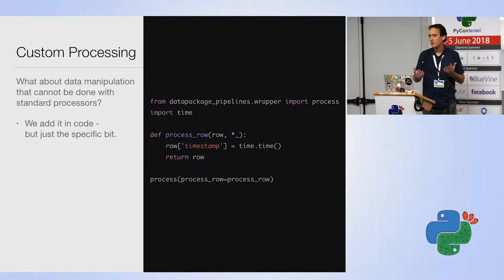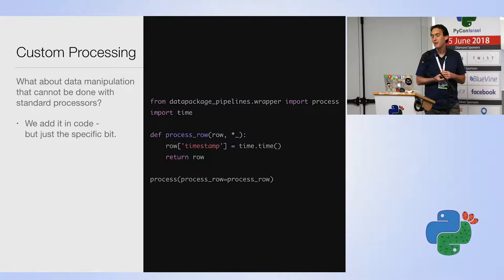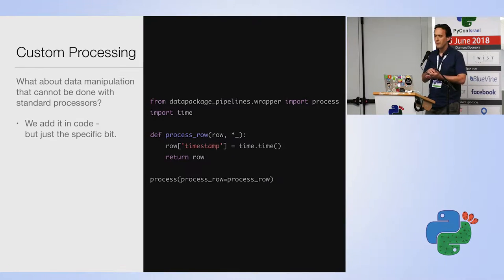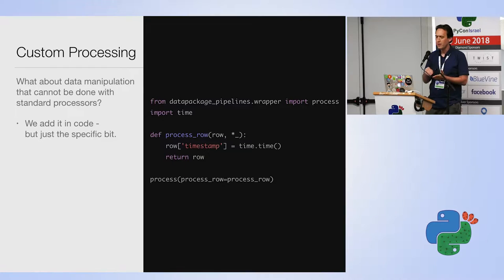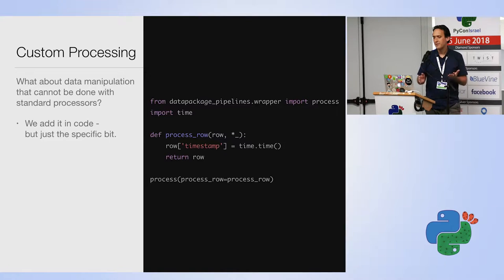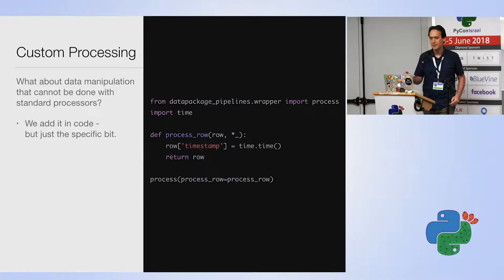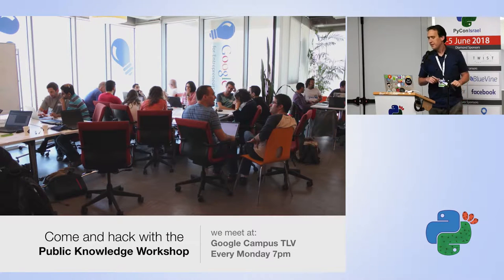For custom processing, you can write your own processor. For example, one that adds a timestamp to all rows — we don't need a building block for that, it's easy to add. The beauty is you don't need to worry about loading or storing data; you just do the line-by-line processing and add it to the pipeline. A pipeline could be 95% standard building blocks with just this one custom piece.